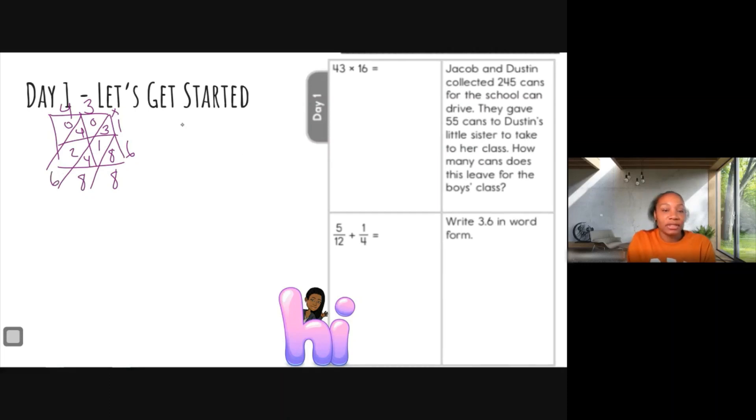Okay, I can also check my answer using the standard algorithm. So I have 43 times 16. 6 times 3 is 18, carry the 1. 6 times 4 is 24, plus one more is 25. And if I carried my 2, I would just bring it down here.